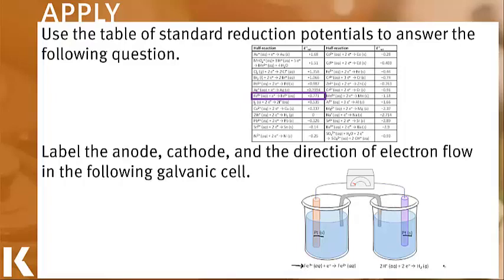Next, I look at the right side of my cell and I see that I have hydrogen ions going to hydrogen gas. When I look at my table, I see that hydrogen has a reduction potential of 0.